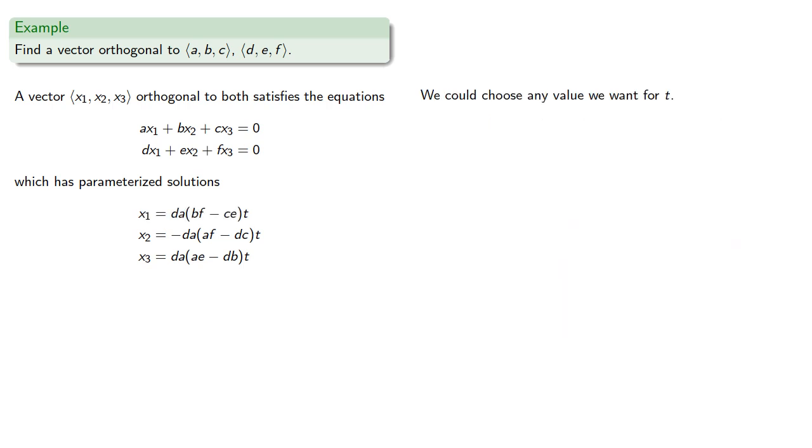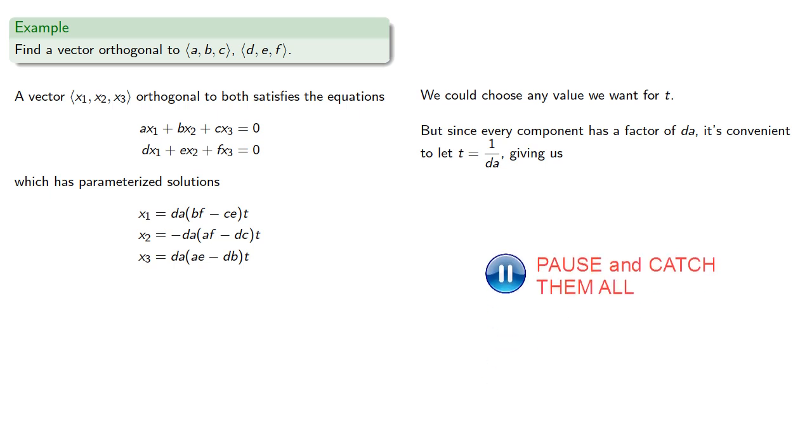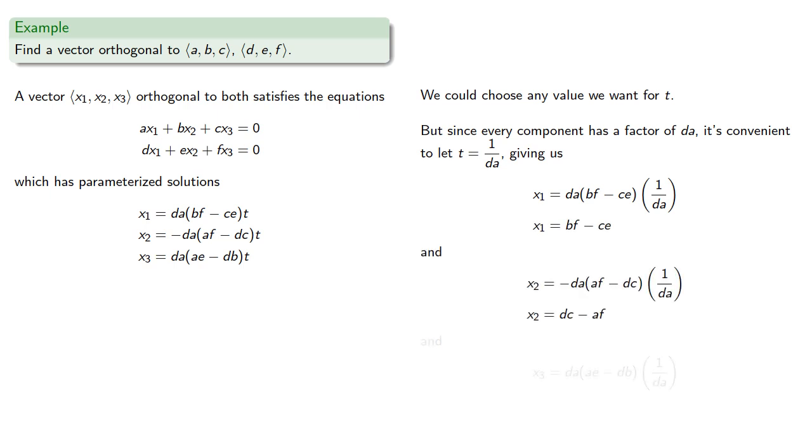Now again, we could choose any value we want for t, and t equals 1 will definitely work. But since every component has a factor of dA, it's convenient to let t be 1 over dA, which gives us—for our three components.